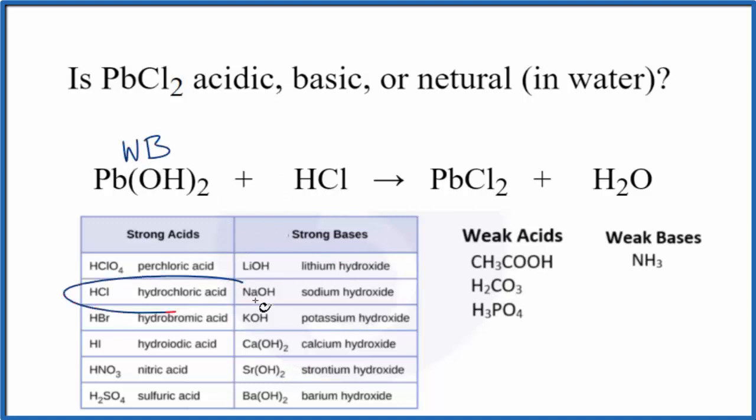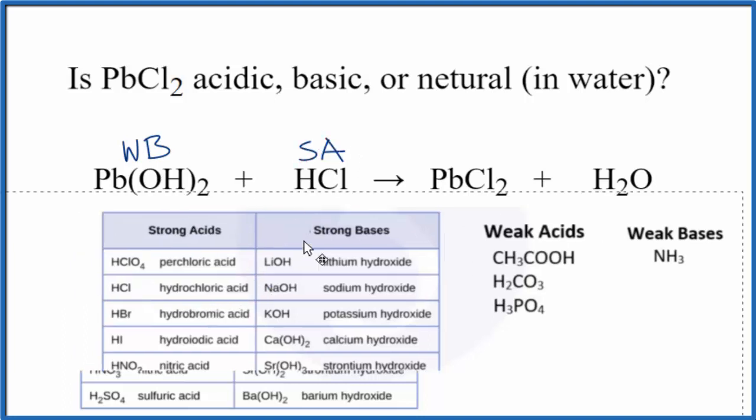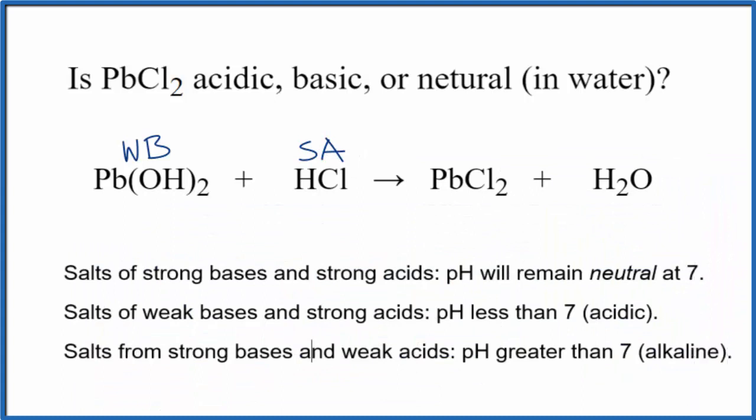HCl, though, that right here is a strong acid. So write SA up there, so we can remember that. And now we know the strengths of the acid and the base. So we can use the rules to figure out if PbCl2 is acidic, basic, or neutral in water.